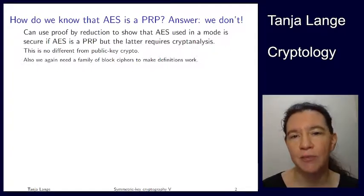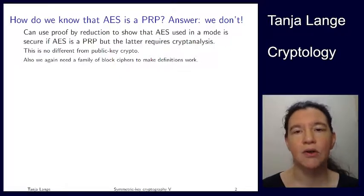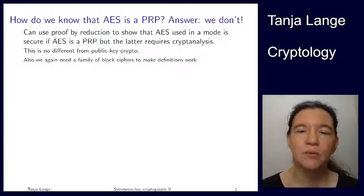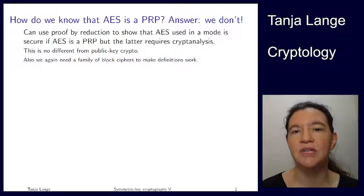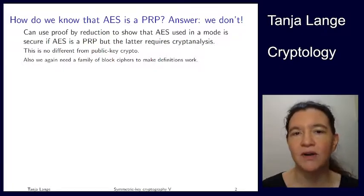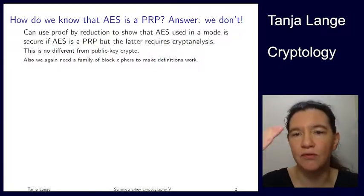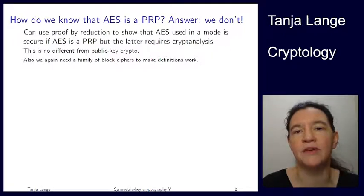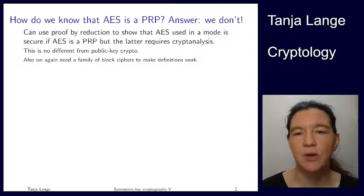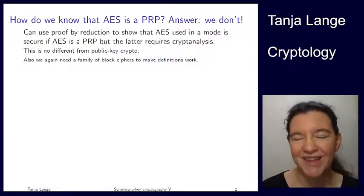But when we talk about proof security then we assume it's a PRP and then we can build bigger systems on top of it. For instance, you can make proofs about AES in a certain mode. But for the latter part we really need to look into the details, into the building blocks of this function. But at some point you can't do otherwise than really getting your hands dirty and analyzing it.